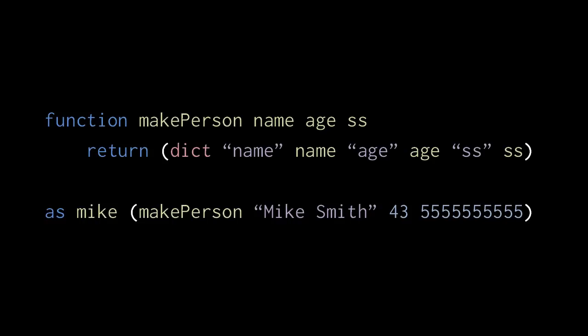The function would then return a new dictionary with a key name with the value Mike Smith, a key age with the value 43, and a key ss with the value 555-555-5555.